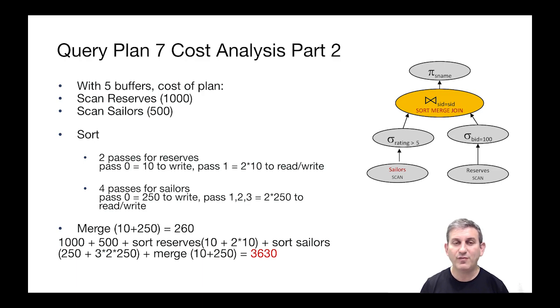Assume we have five buffers, the cost of the plan is going to work out like this. We scan reserves, that's a thousand. We scan sailors, that's 500. And then let's look at sorting each side. On the right hand side, it's going to take us two passes to sort reserves because there's only 10 pages to sort. So in pass zero, we're not going to pay for the read because we assign that to reserves. We're going to pay for the write, that's 10 IOs. And then in pass one, we'll have to read and write the output of the first, the zeroth pass. So that is two times 10, total for reserves.